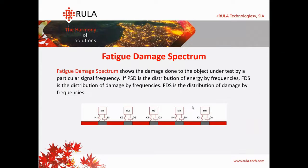Now let's talk about fatigue damage spectrum. Fatigue damage spectrum shows the damage done to the object under the test by a particular signal frequency. Like PSD is the distribution of energy by frequencies, fatigue damage spectrum represents the distribution of damage by frequencies. Here you see the picture of multiple spring-mass systems. Each of them has its own damping factor and natural frequency. The certain signal will affect the spring-mass system, and after this we calculate the level of damage using the Palmgren-Miner rule — we calculate the damage for every spring-mass system.